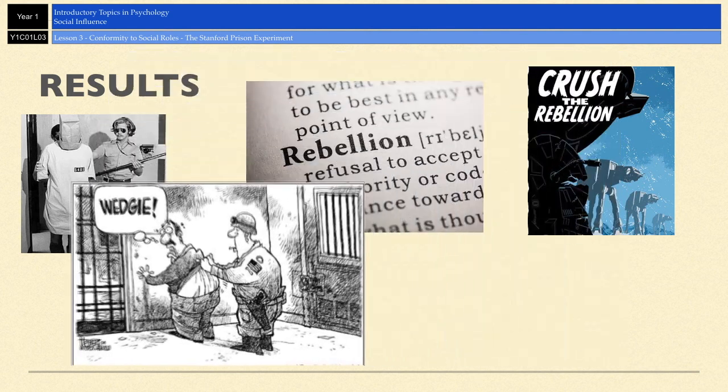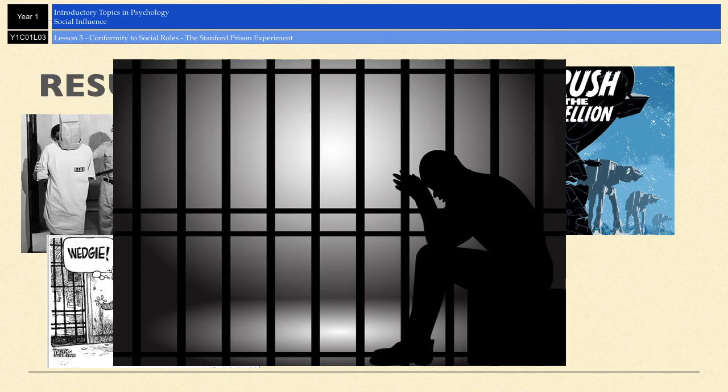Five of the six prisoners were released from the experiment early because they had such extreme adverse reactions to the physical and mental torment they were being subjected to. For example, there was a lot of uncontrollable crying, and they started to display extreme symptoms of anxiety and depression, so they had to be released early.